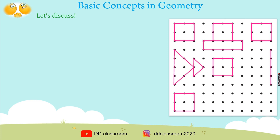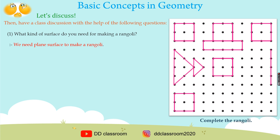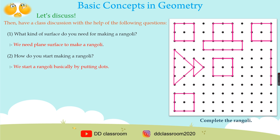See the picture. Complete the rangoli. I hope you finish the rangoli. Then have a class discussion with the help of the following questions. Question one: What kind of surface do you need for making a rangoli? The answer is we need a plain surface to make a rangoli. Question two: How do you start making a rangoli? The answer is we start a rangoli basically by putting dots. Question three: What did you do in order to complete the rangoli? The answer is we join the dots as per our requirement.